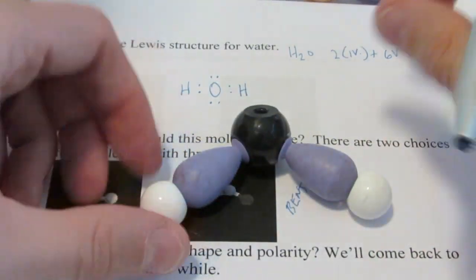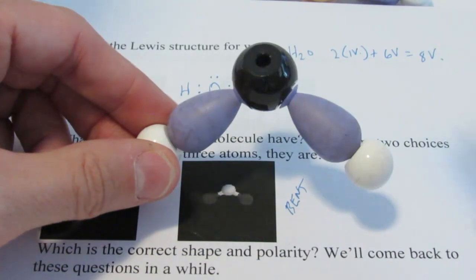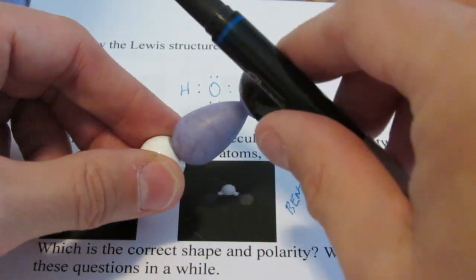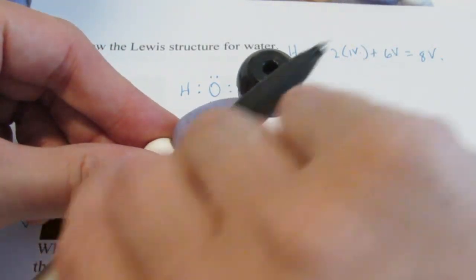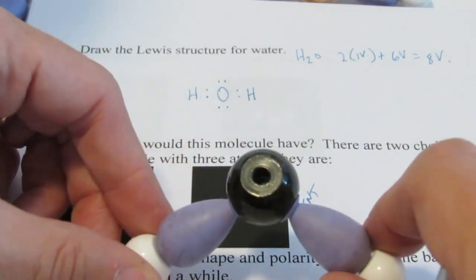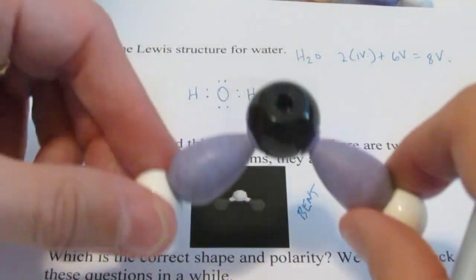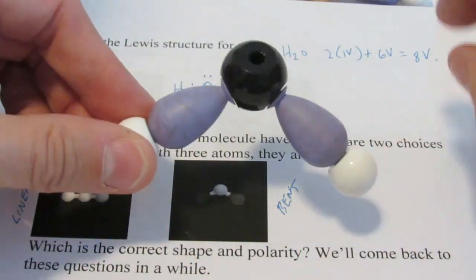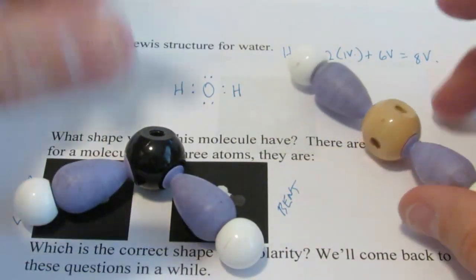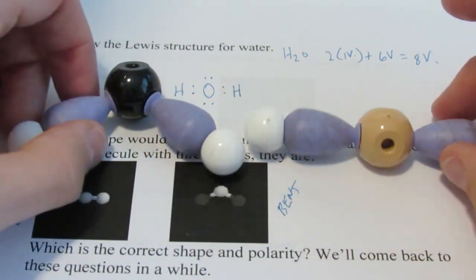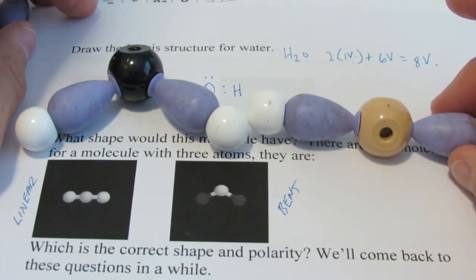But, if it were a bent arrangement, we would have a dipole moving in this direction, and another dipole moving in this direction. They would have an additive effect, and we would have a polar molecule. So, knowing the shape really helps us in determining whether the molecule is going to be polar or nonpolar.